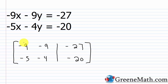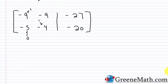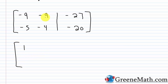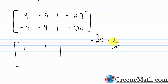We want ones down the diagonal and a zero below. To make negative 9 into a 1, multiply row 1 by its reciprocal, negative 1 ninth. Negative 9 times negative 1 ninth gives 1; negative 9 times negative 1 ninth gives 1 again; and negative 27 times negative 1 ninth gives 3. Row 2 stays as negative 5, negative 4, negative 20.